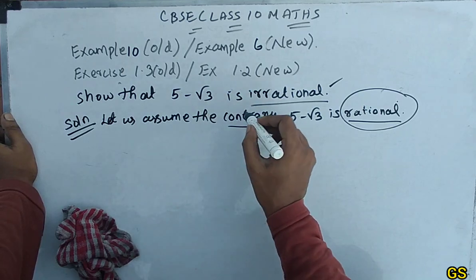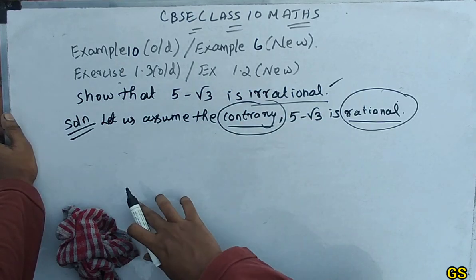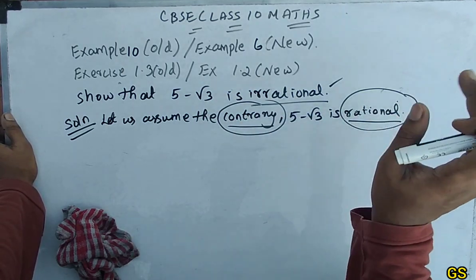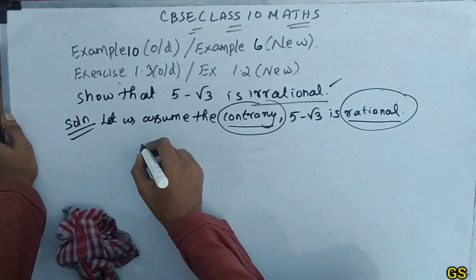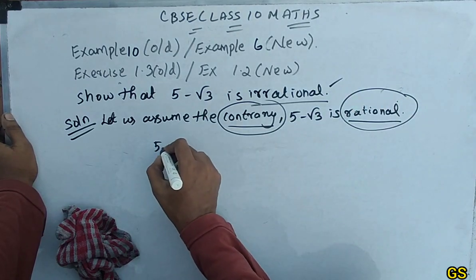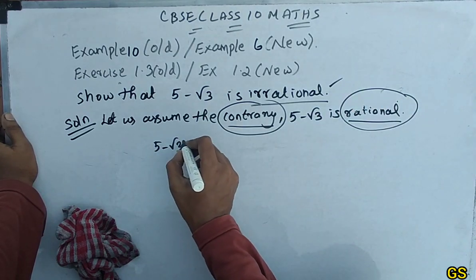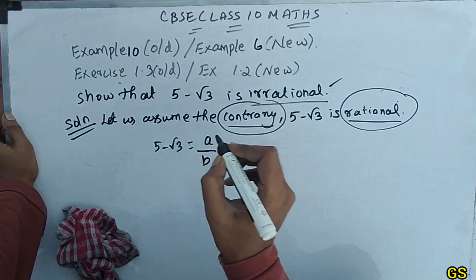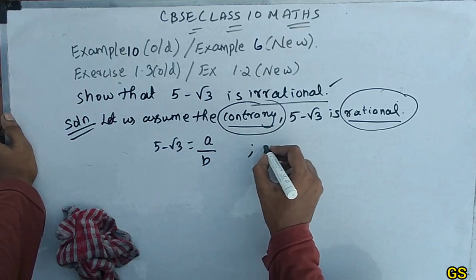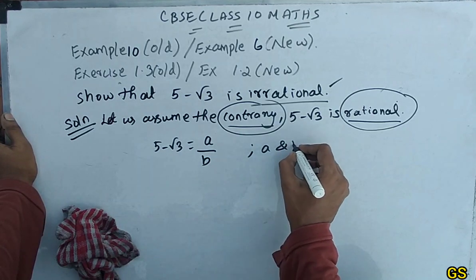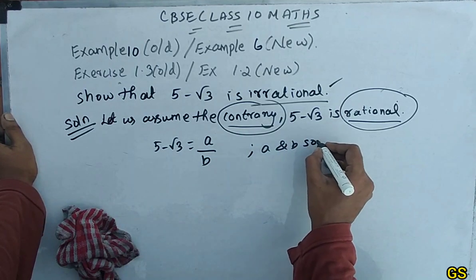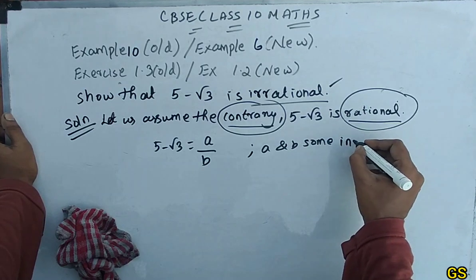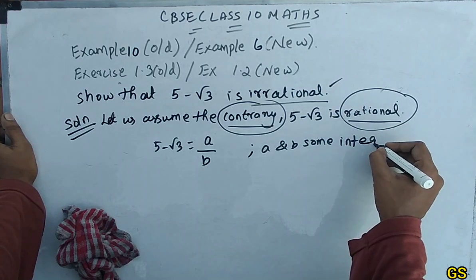This is the contradiction method. So, if 5-√3 is rational, then 5-√3 is equal to a/b format, where a and b are some integers.